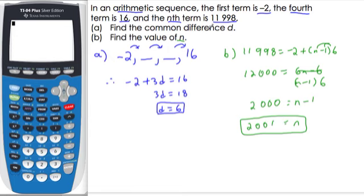and that gives us that n equals 2,001, meaning that the 2,001st term in this arithmetic sequence is 11,998.